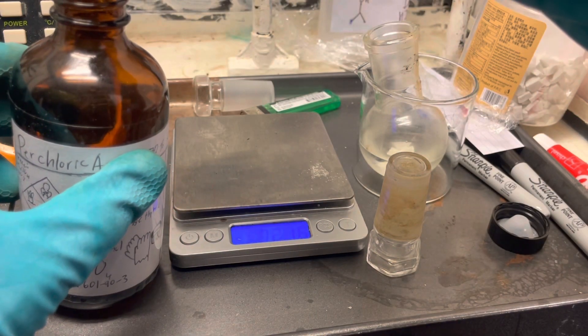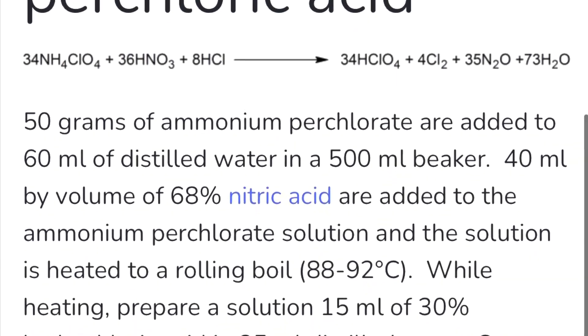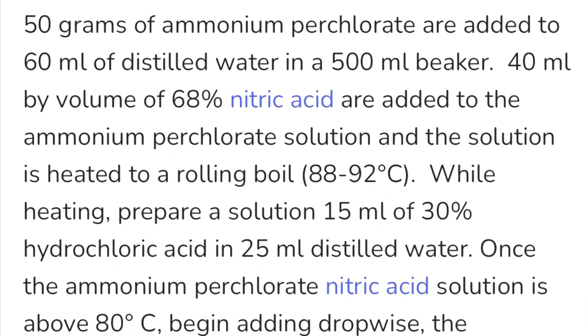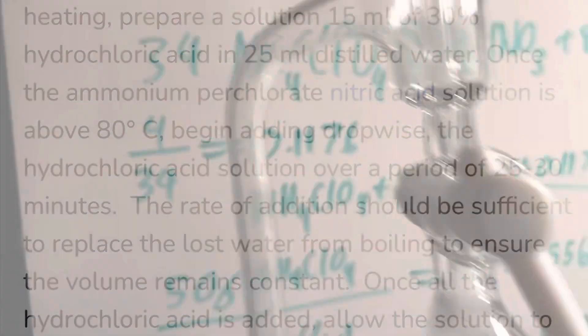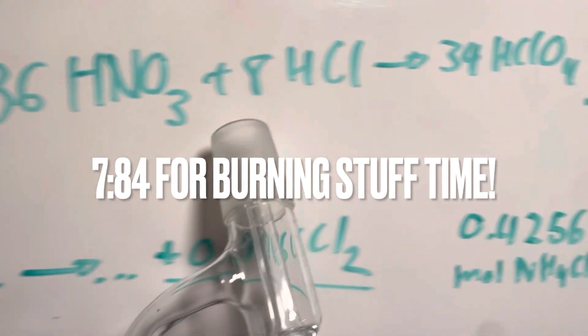So today we'll be making some perchloric acid. Now I'm going to follow this prep chem procedure with a few little of my modifications, because it's not going to work in the conditions I'm doing this in. I'll link this in the description. So now the issue with this reaction is that it forms chlorine gas, and also we have to boil the perchloric acid.